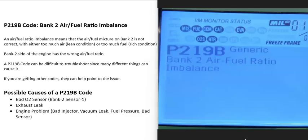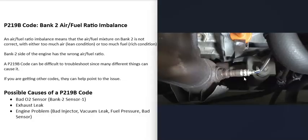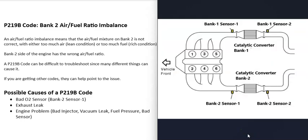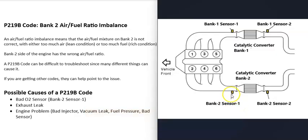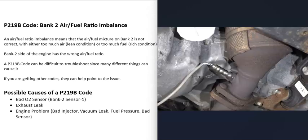The first possible cause is that the bank 2 sensor 1 O2 sensor has gone bad and is reporting bad information back to the computer — so the computer thinks there's a problem when there might not be one. There are typically two O2 sensors per bank: sensor 1 is located before the catalytic converter (the upstream O2 sensor), and sensor 2 is after it (the downstream O2 sensor). The bank 2 sensor 1 is the one to check. You can test it with a multimeter or a good OBD2 scan tool with live data — I'll put links in the description below.